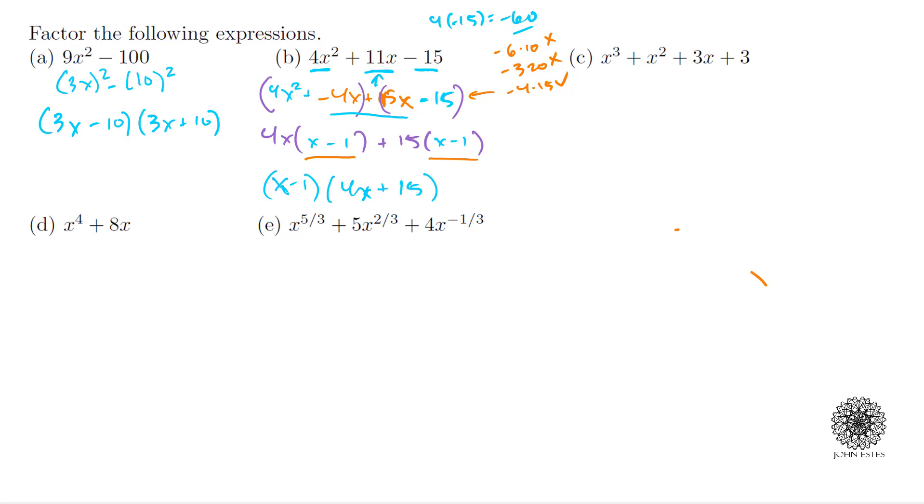We can use factor by grouping for part (c) as well. This is not a quadratic but it'll still work. I'm going to factor my first two terms and then factor my second two terms. Out of my first two terms I can take out an x², and when I do that I'm left with (x + 1). In my second group I can take out a 3 and again I'm left with (x + 1). By the same reasoning, I have two terms with a common factor (x + 1), so I can take out the (x + 1). Out of my first group I'm left with x² and out of the second group I'm left with +3.